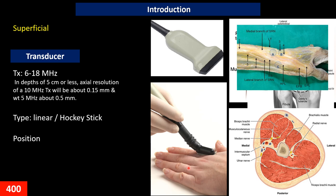The frequency of the transducer we use depends on the depth of our image. It can be between 6 to 18 MHz, and some vendors even create probes over 18 MHz. All of this depends on the depth of the structure we are evaluating. Nowadays, with high-quality images, the resolution of ultrasound is much better than other modalities like MRI or CT.